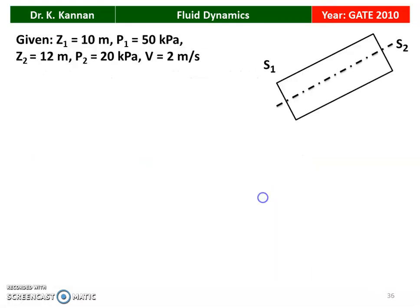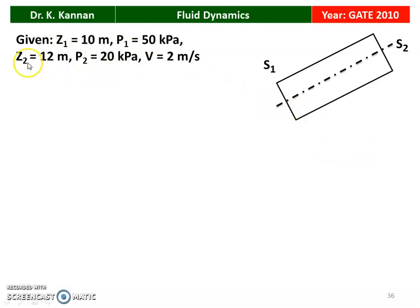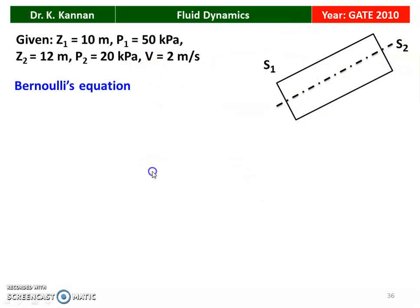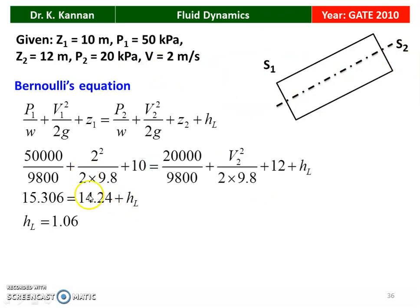We will see how in the next slide. Here is the given data and arrangement. S1 is at 10 meters from the datum, P1 is 50 kilopascal. Z2 is 12 meters from the datum and P2 is 20 kilopascal. Velocity in the pipeline is 2 meters per second. Applying Bernoulli's equation.